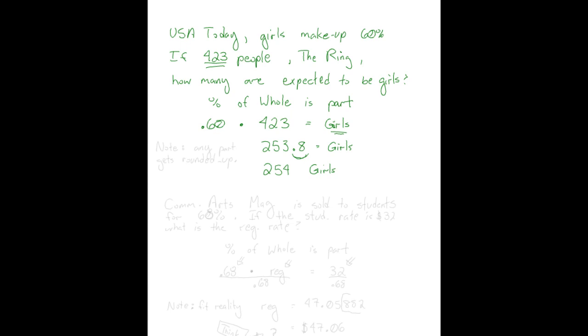And so this would be 254 girls can be expected to attend the movie. Now, even if this was 253.2, you can't sell .2 of a ticket, so even in that case, you would round up. So know that really any part gets rounded up,